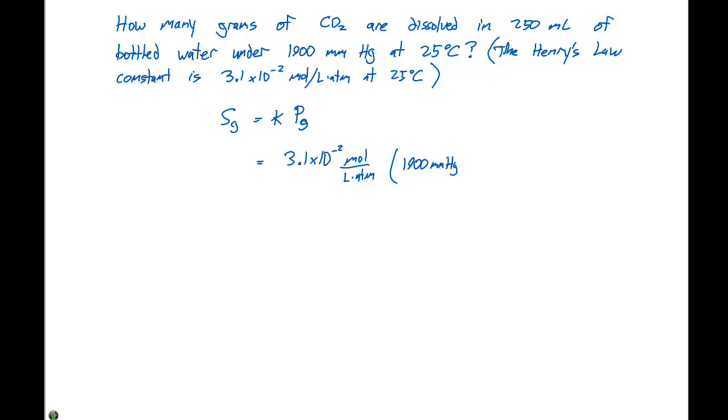In this case, our constant's given in moles per liter atmosphere, and we have millimeters of mercury. So we need to convert this from millimeters of mercury to atmospheres. One atmosphere is 760 millimeters of mercury.